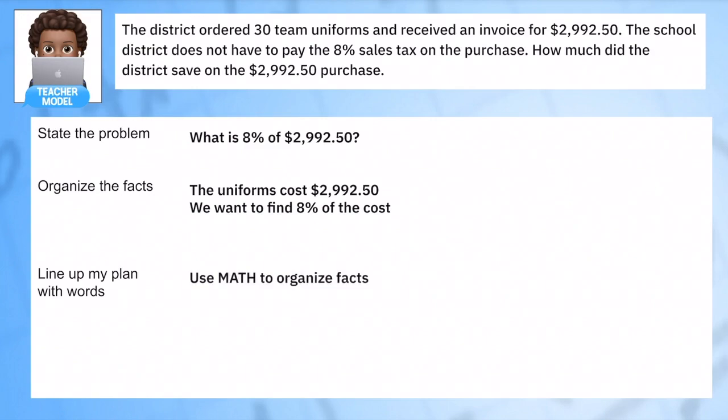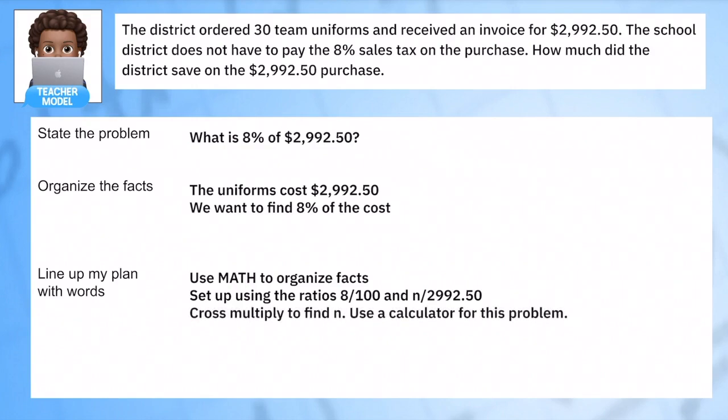Our plan is going to be to use math to organize our facts by setting up two ratios. 8 out of 100 is equal to a number out of 2,992.50, and we're going to cross multiply to find out what that number is.